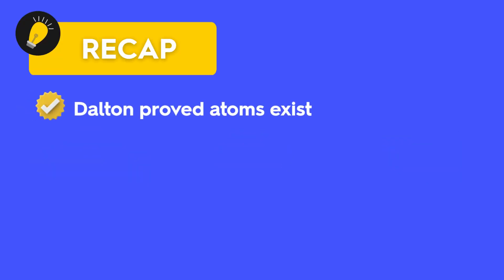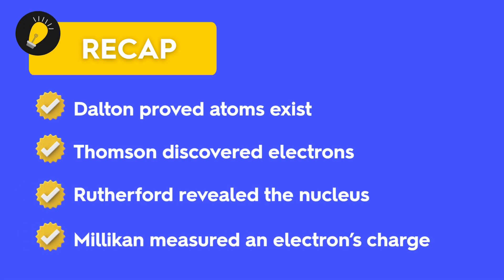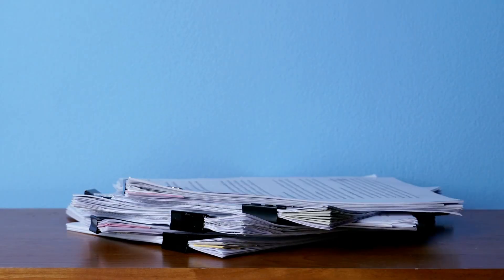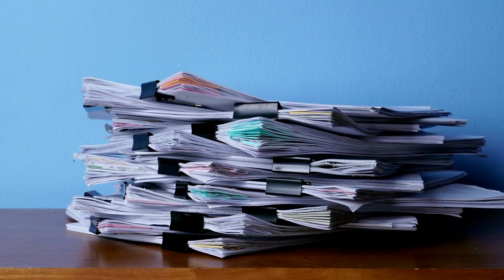To recap, Dalton proved atoms exist, Thomson discovered electrons, Rutherford revealed the nucleus, and Millikan measured an electron's charge. Four experiments, one evolving atomic picture. Every experiment built on the last, proof that science moves forward not in leaps, but in layers.